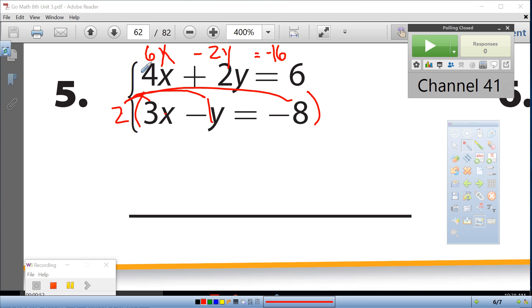Now, 6x and 4x is 10x, negative 2y and a positive 2y cancel out, negative 16 and 6 is a negative 10.